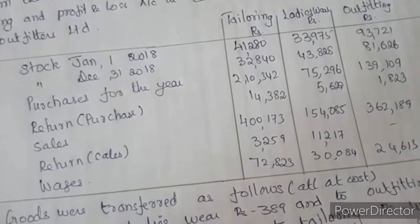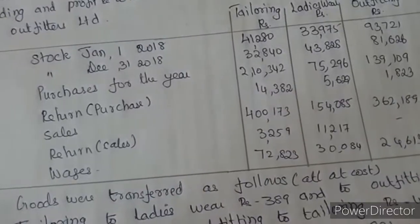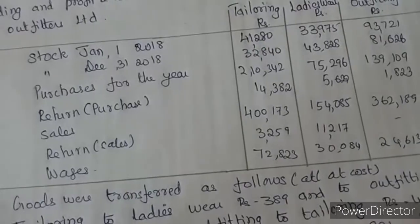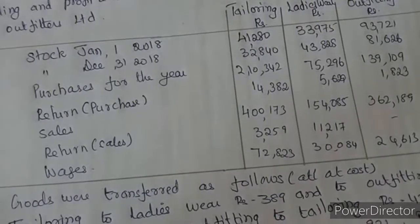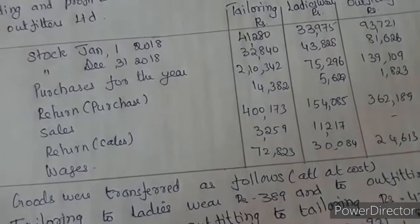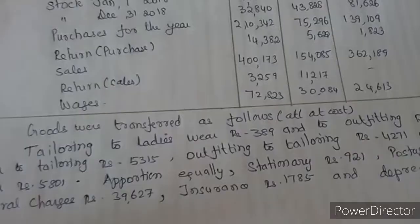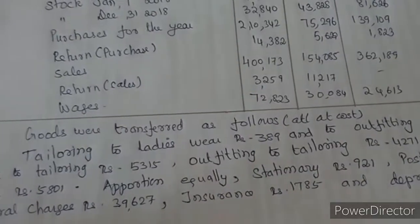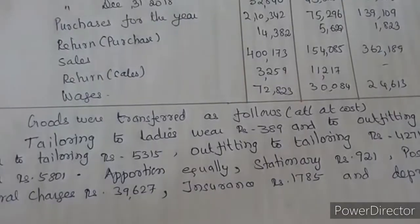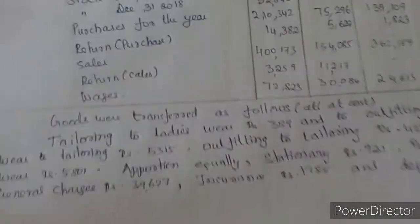The three departments are Tailoring, Ladies Wear, and Outfit. The transactions include: Opening Stock in January, Closing Stock in December, Purchases for the year, Purchase Returns, Sales, and Wages. Goods are transferred between departments at Cost Price — Tailoring to Ladies Wear departments.